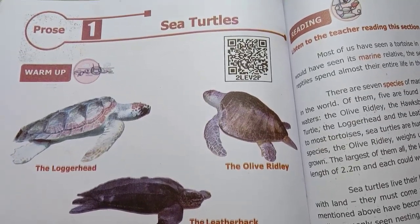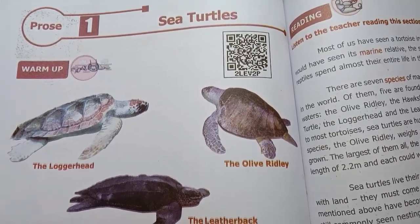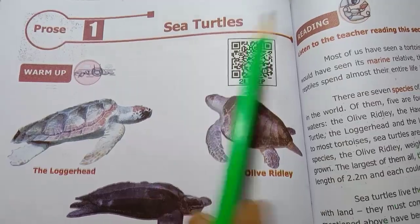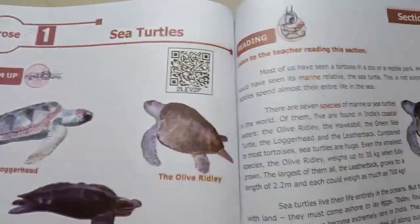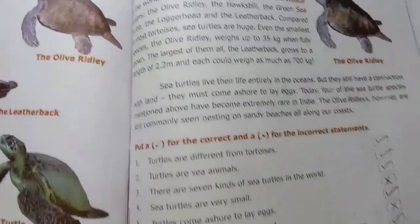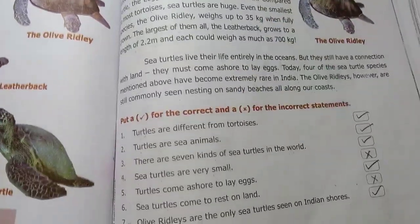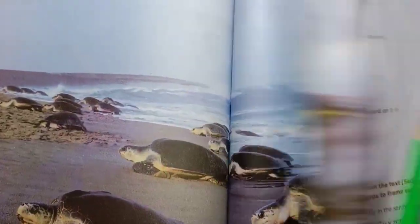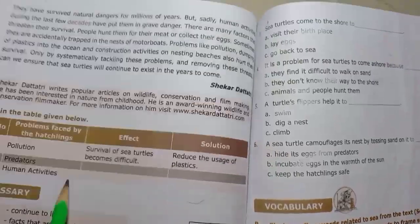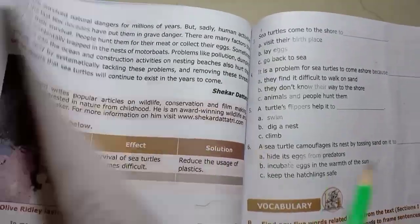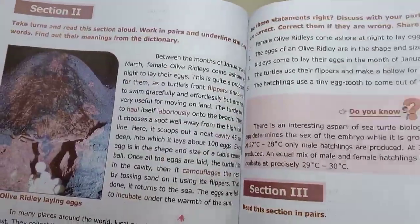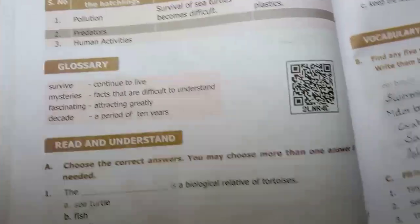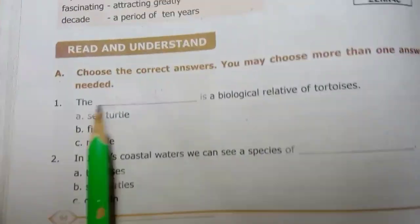In this video, Grade 6 Standard English Term 1, Prose 1: Sea Turtles. We already have a summary at Section 1, then exercise Section 2 and its exercise, then Section 3. Now we are moving to the book back exercise.